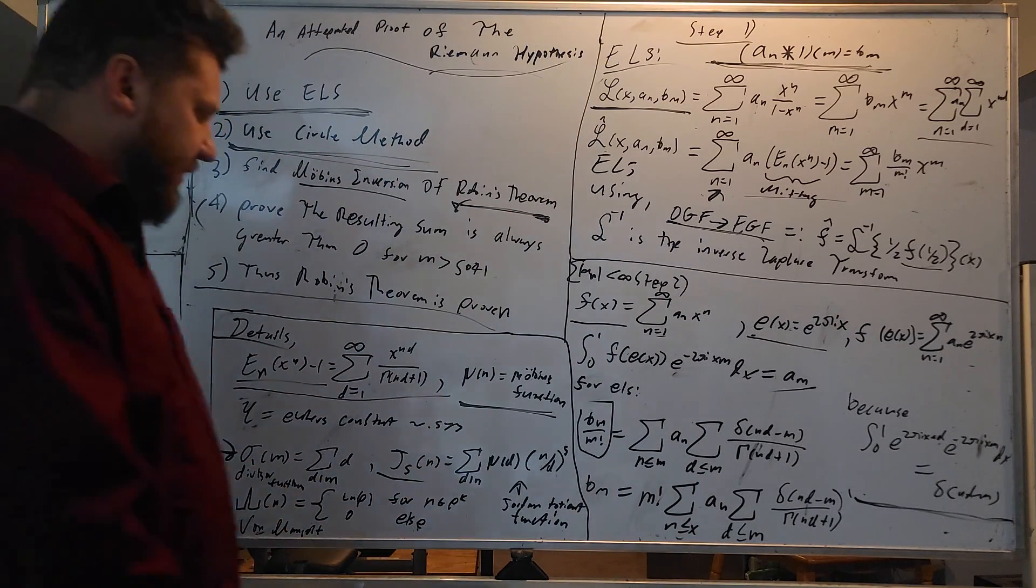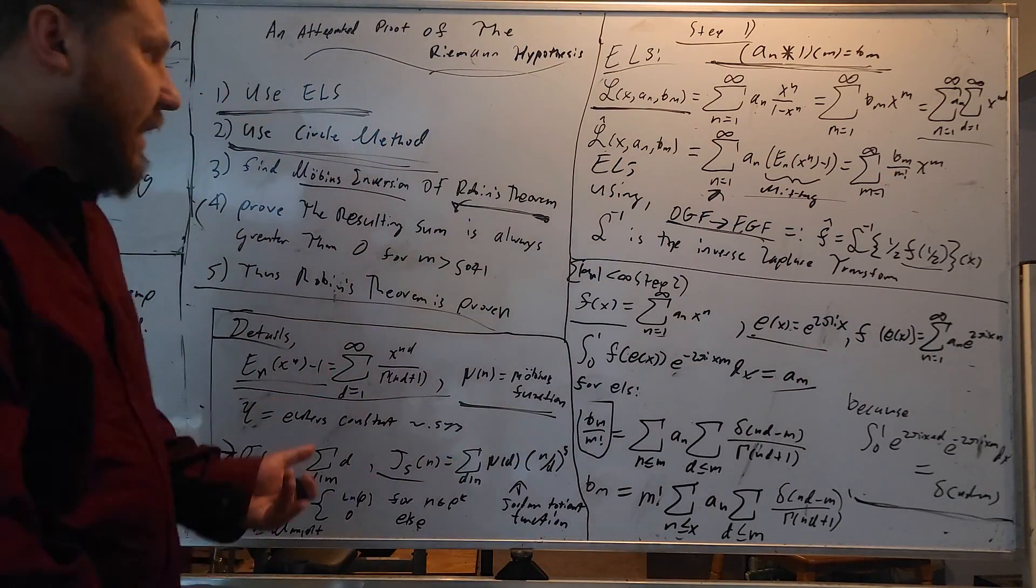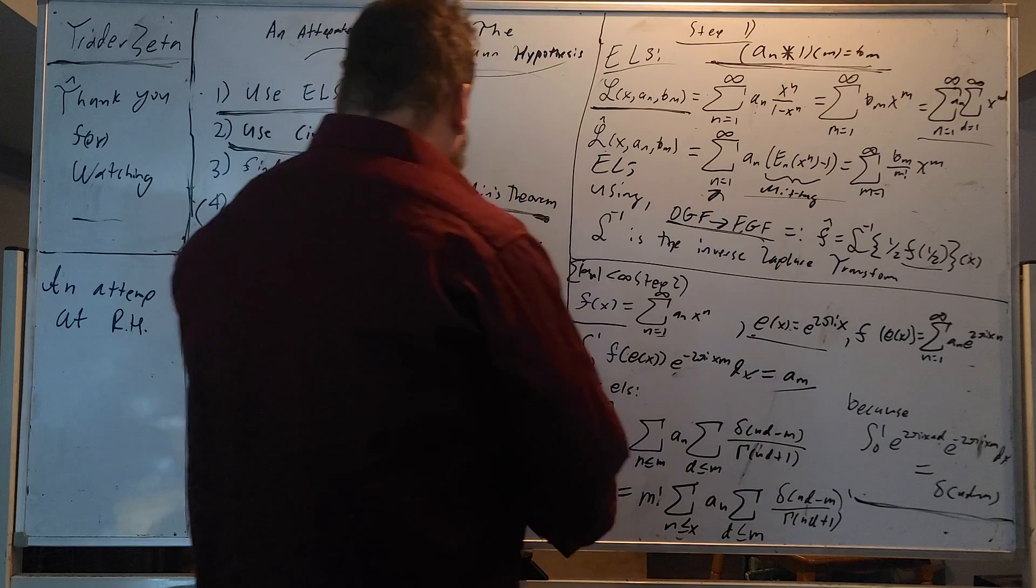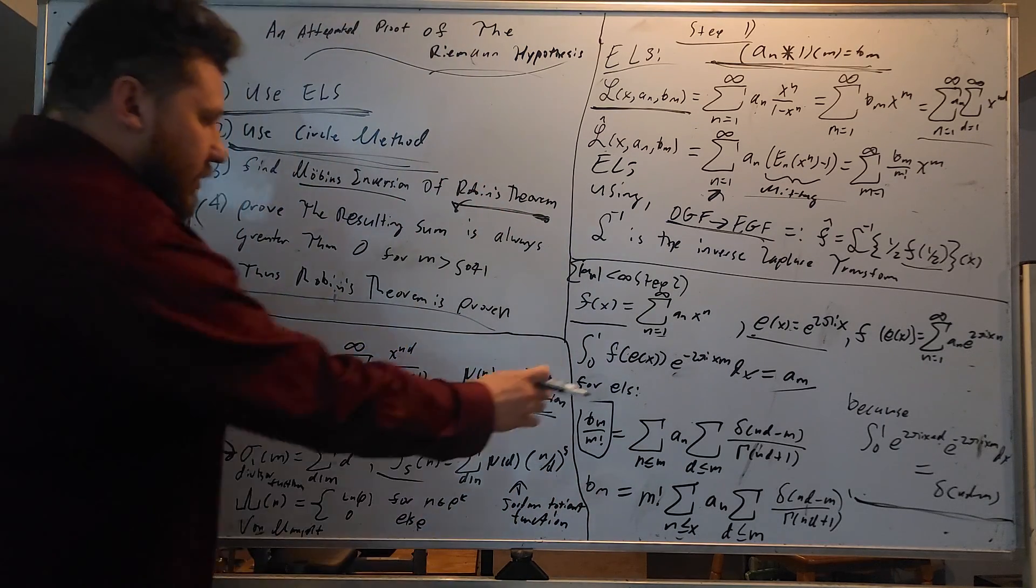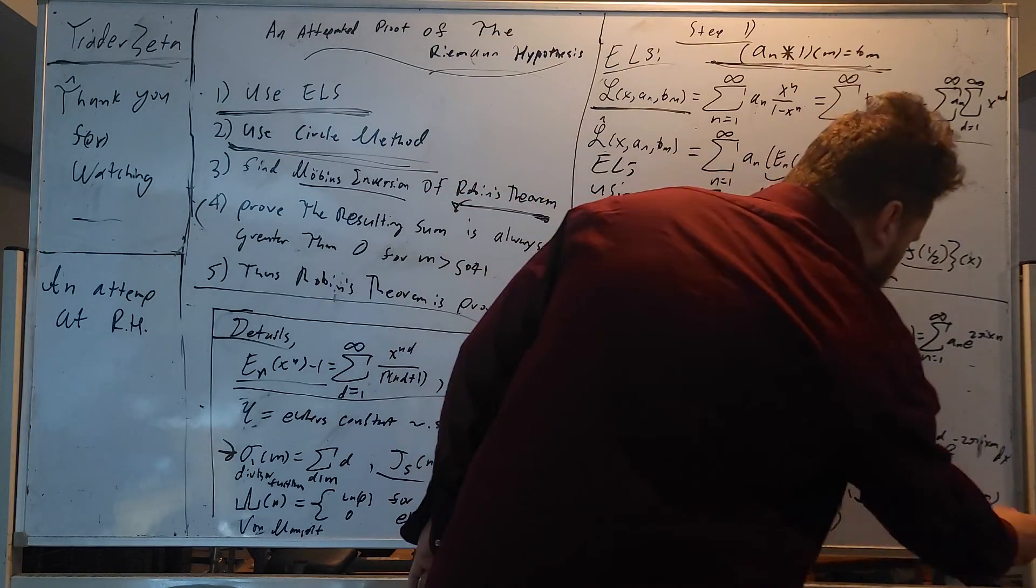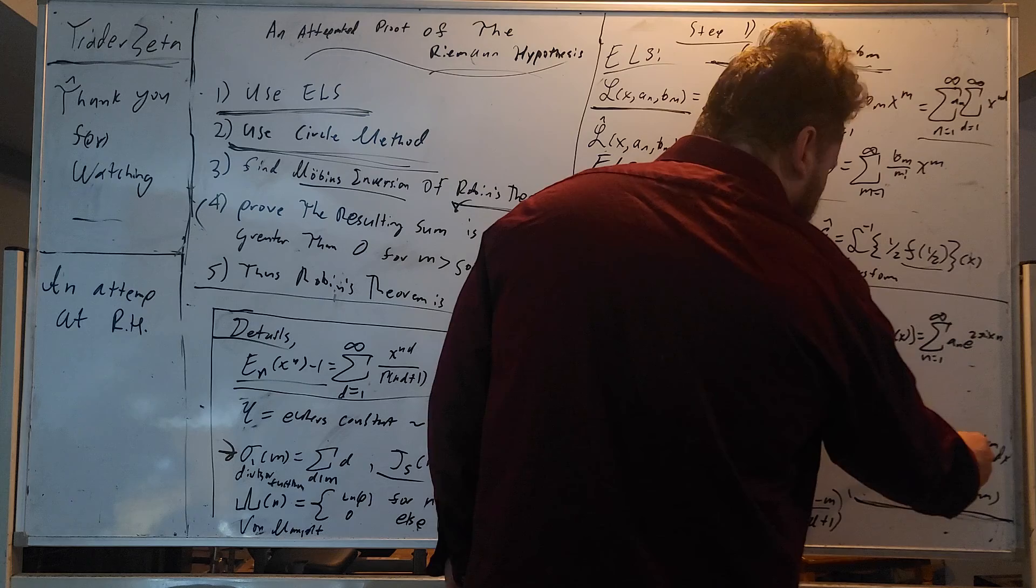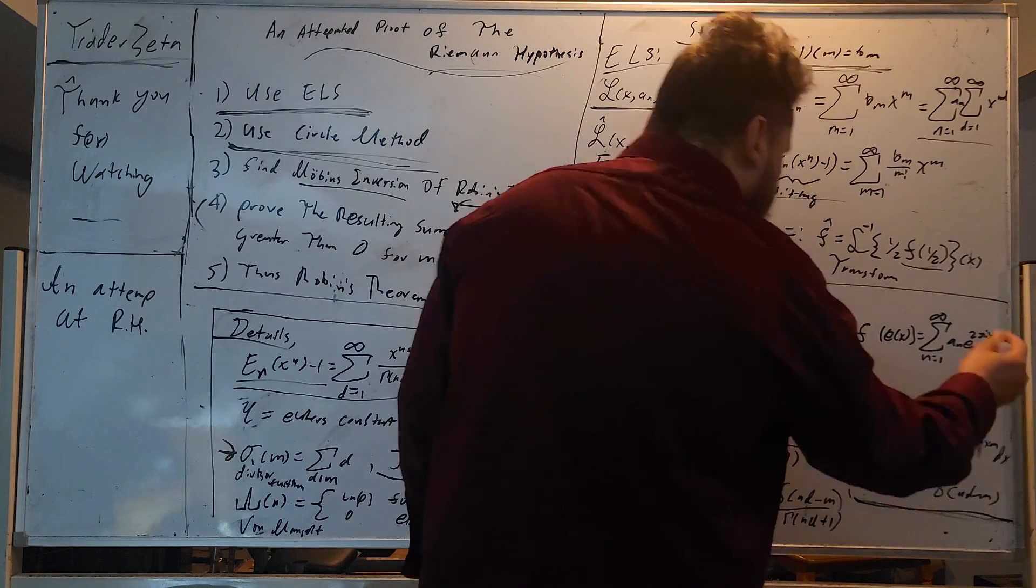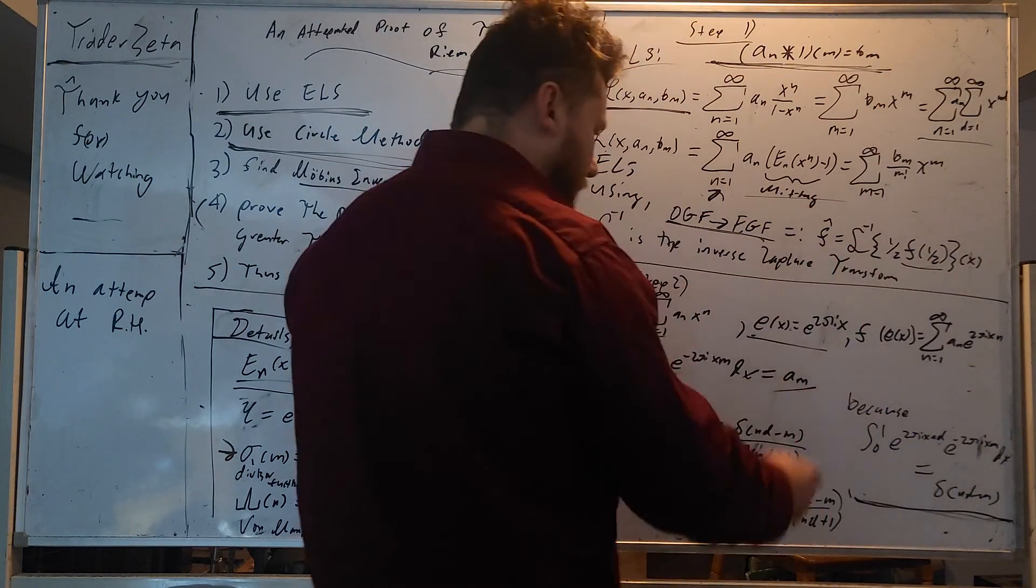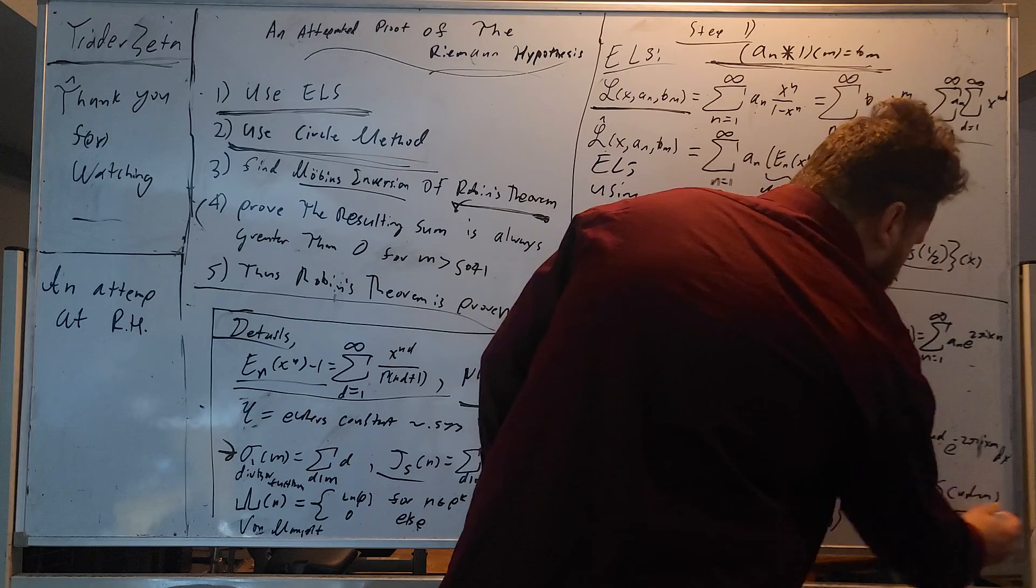So that brings us to the divisor function. The first divisor function of m equals the divisors of m. And so what we'd like to do is we'd like to find some type of coefficient extraction for b sub m. We have this in a series. We'd like to isolate the b sub m divided by m factorial in a very elegant way. So what we can do is we can use something called the circle method.